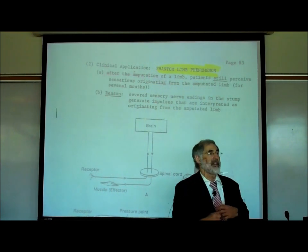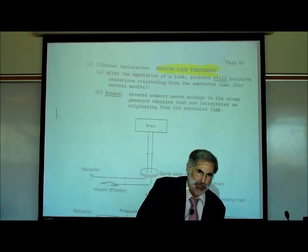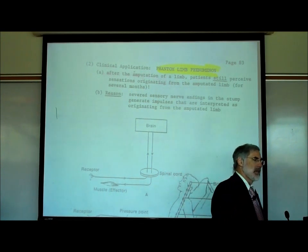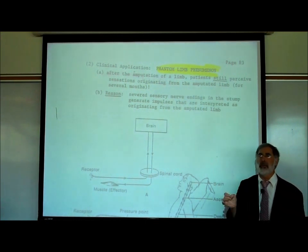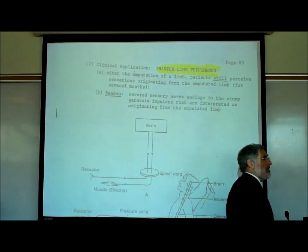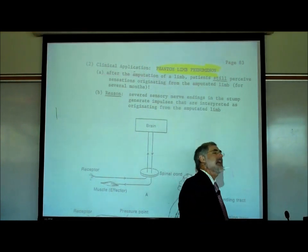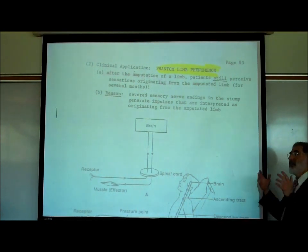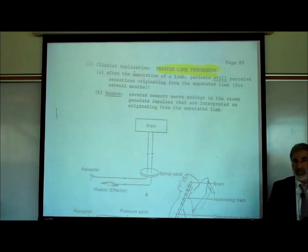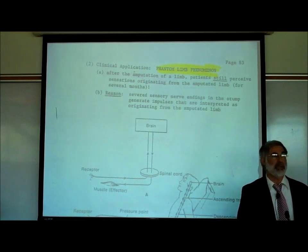This is really an example of what the law of projection says. The most common reason for amputating an arm or a leg is diabetes. Chronic, unmanaged diabetes causes poor circulation to the extremities, resulting in infections and necrotic tissue — the tissue starts to die — and then they have to amputate.